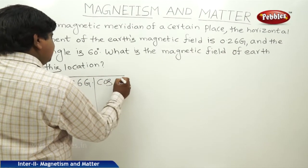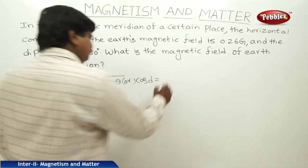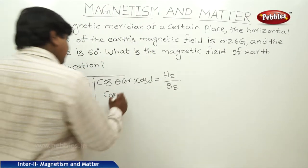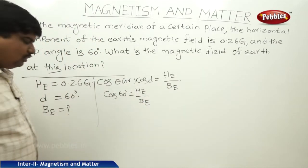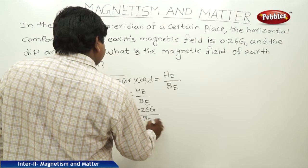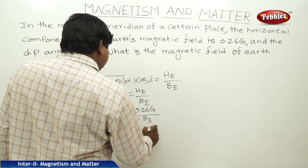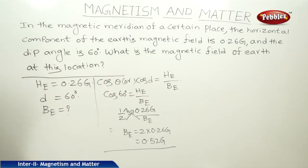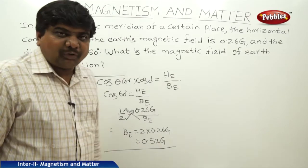We know that cos D = HE/BE. So cos 60° = HE/BE. Cos 60° is 1/2, and HE is 0.26 Gauss, so 1/2 = 0.26/BE. Cross-multiplying, BE = 2 × 0.26 Gauss = 0.52 Gauss. So if the angle of dip is 60° and the horizontal component is 0.26 Gauss, then Earth's total magnetic field is 0.52 Gauss.